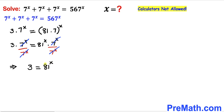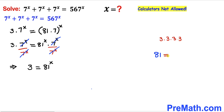Now let's focus on the base 81. Here I have copied down 81. We know 81 could be written as 3 times 3 times 3 times 3, so therefore 81 could be written as 3^4.